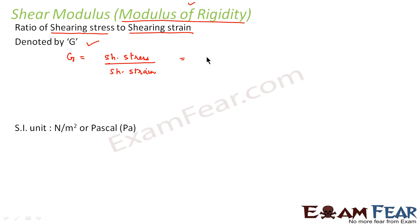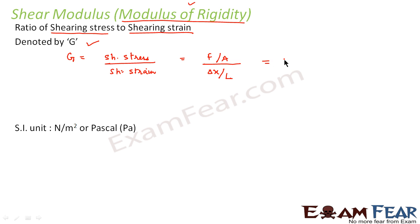Shearing stress is force per unit area. Shearing strain is the small displacement that takes place divided by the initial length L. So shear modulus G is equal to F times L divided by A times delta X.